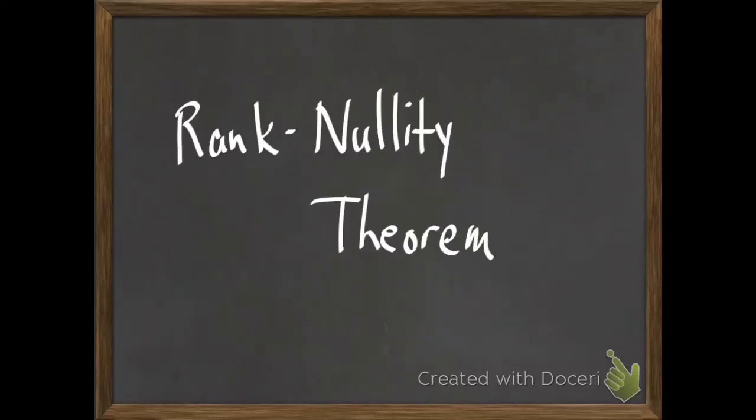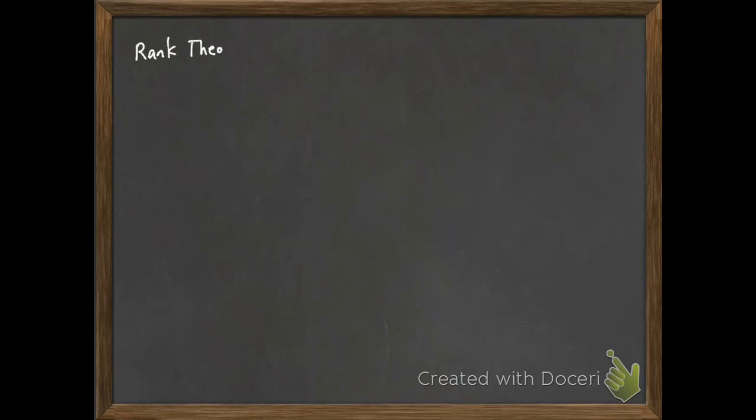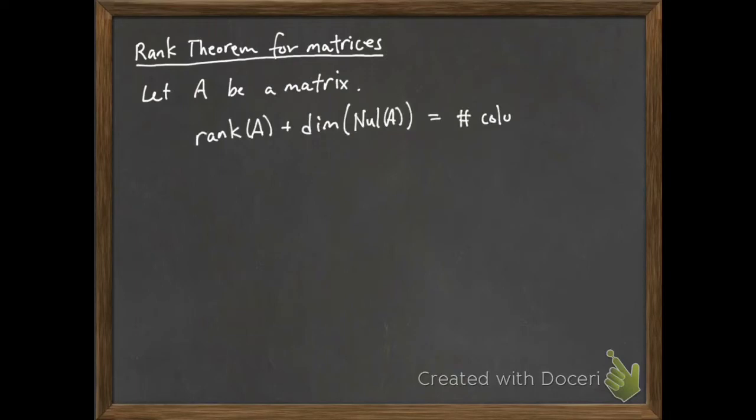Let's talk about the Rank Nullity Theorem, or the Rank Theorem, as it's called in the book. So the Rank Theorem for matrices: suppose I have a matrix A. Then the rank of A plus the dimension of the null space of A is equal to the number of columns of A.